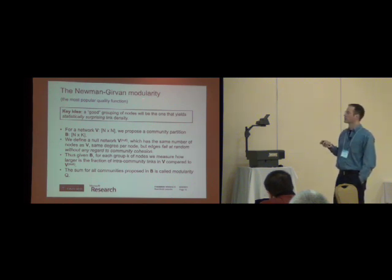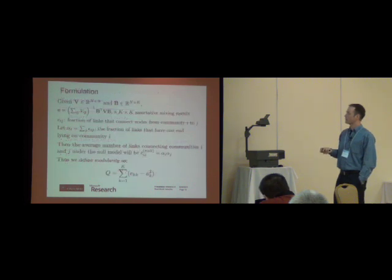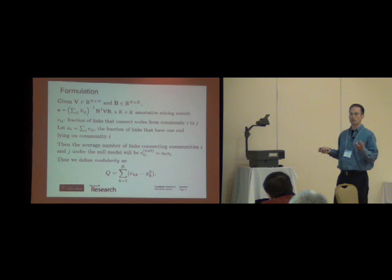So I mentioned that quality function problem. The most common is the Newman-Girvan modularity. The key idea is that a good grouping would be the one that yields statistically surprising link density, so above what you'd expect with the random graph, so more bunching. And we won't go through this modularity, but in brief, you get points, you get positive points for interactions within a community, so if you assign two nodes to the same community and they have a link interacting.